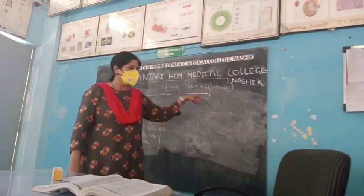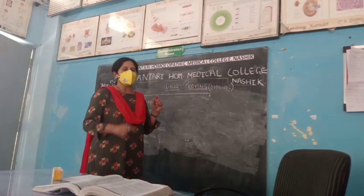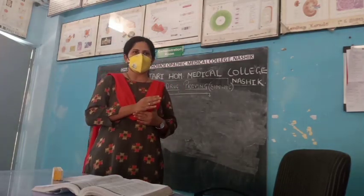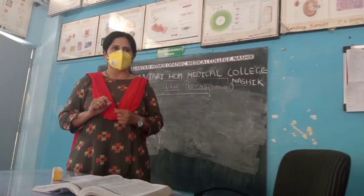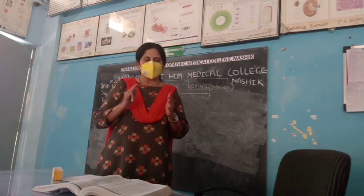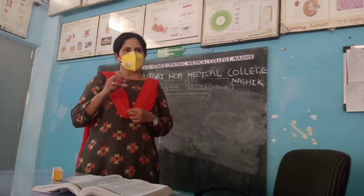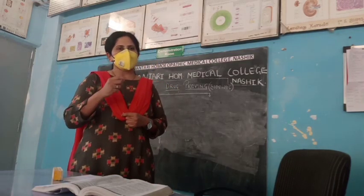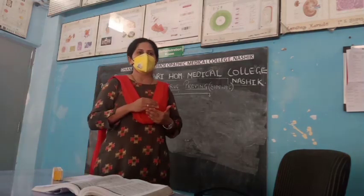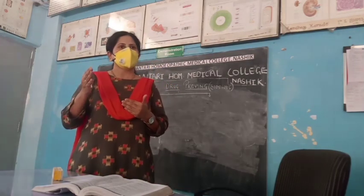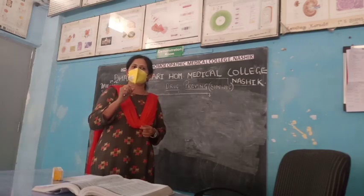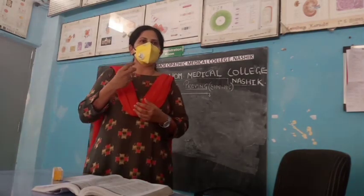Before starting the topic, what is drug proving? In allopathy, animals are taken for drug proving. In homeopathy, we take only human beings. Volunteers are collected, and from those volunteers they are selected according to their physical and mental health. Such volunteers include small children, ladies, and males.